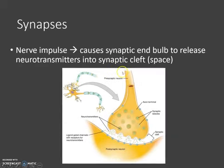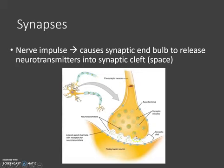A nerve impulse travels along the axon down into the axon terminals and into the synaptic end bulbs, and the nerve impulse or action potential triggers the release of neurotransmitter.